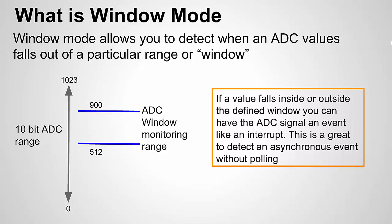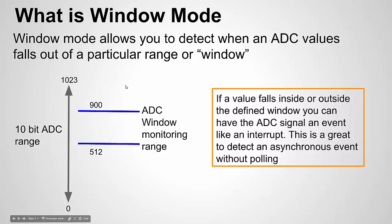On that interrupt you can then do something. For instance, with a 10-bit ADC range - values from 0 to 1023 - you could define a window of 512 to 900, and any value that goes outside that window triggers an interrupt. Think of a home automation system with a light sensor: if light at a window gets too high you might want to shut a blind, or if it gets too low you might want to turn on a light. You can use window mode to detect that asynchronous event and trigger either a light to turn on or a blind to close.